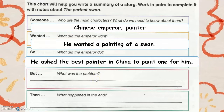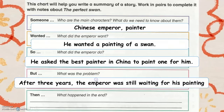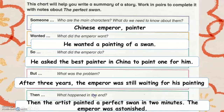But, what was the problem? After three years, the emperor was still waiting for his painting. Then, what happened in the end? The artist painted a perfect swan in two minutes. The emperor was astonished.